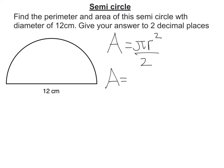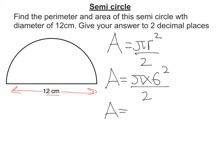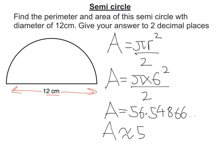Put our numbers in. A is equal to pi times the radius squared over 2. Now, the given measurement is the diameter. So I need half of that for the radius. Half of 12 is 6. So that's pi times 6 squared over 2. Putting that into the calculator gives 56.54866, so rounding to two decimal places that's 56.55 centimetres squared.